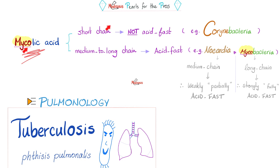If your mycolic acid chain is short — like Corynebacterium — you are not acid-fast. If it's medium, like Nocardia, you are weakly acid-fast. If it's long, like Mycobacterium tuberculosis, you are strongly acid-fast. Long-chain mycolic acid means strongly acid-resistant.